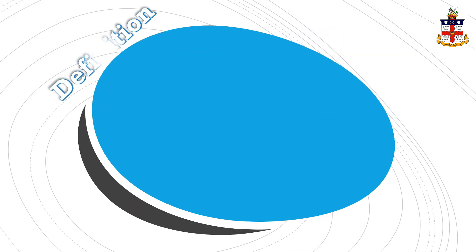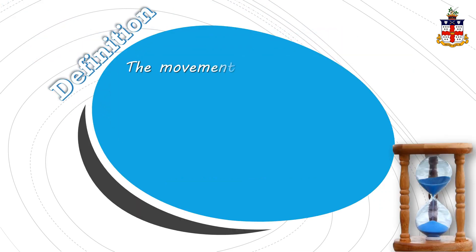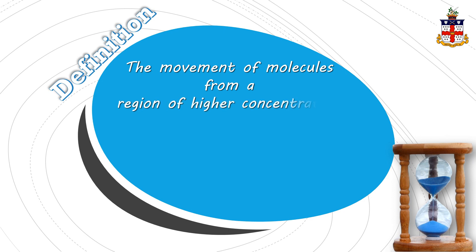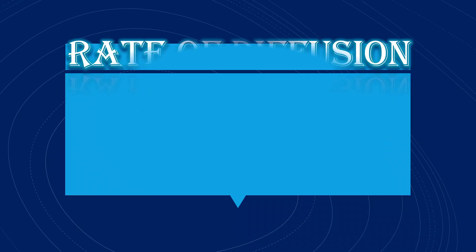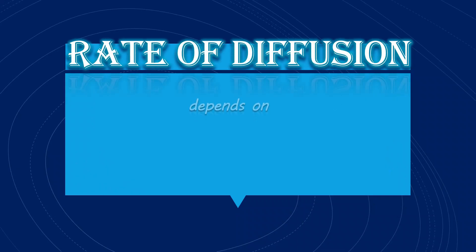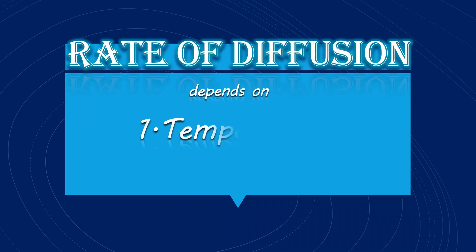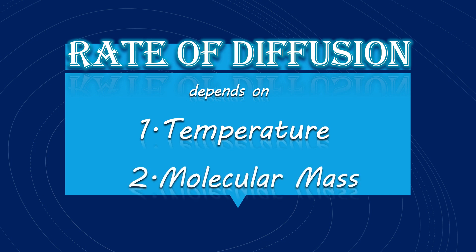Diffusion is defined as the movement of molecules from a region of higher concentration to a region of lower concentration to form a homogeneous mixture. The rate of diffusion depends on two factors: temperature and molecular mass.